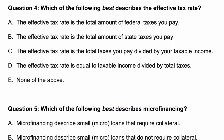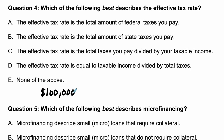Hello, welcome. We're solving a question here that deals with describing the effective tax rate. So the idea is that when you earn income, let's say your gross income is $100,000. This is the amount of money you have coming in over the course of a whole year.